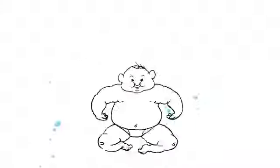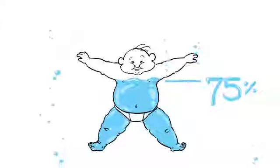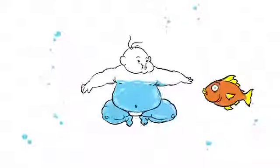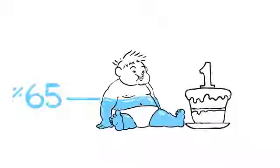At birth, human babies are even wetter. Being 75% water, they are swimmingly similar to fish, but their water composition drops to 65% by their first birthday.